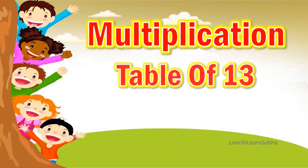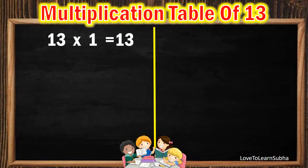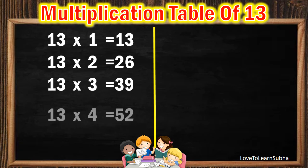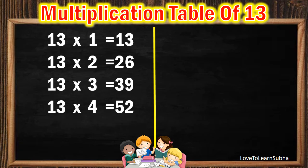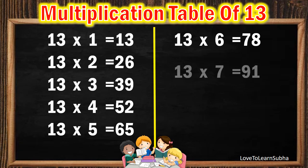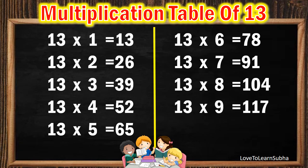Now, let's repeat it once again. 13 ones are 13, 13 twos are 26, 13 threes are 39, 13 fours are 52, 13 fives are 65, 13 sixes are 78, 13 sevens are 91, 13 eights are 104, 13 nines are 117, 13 tens are 130.